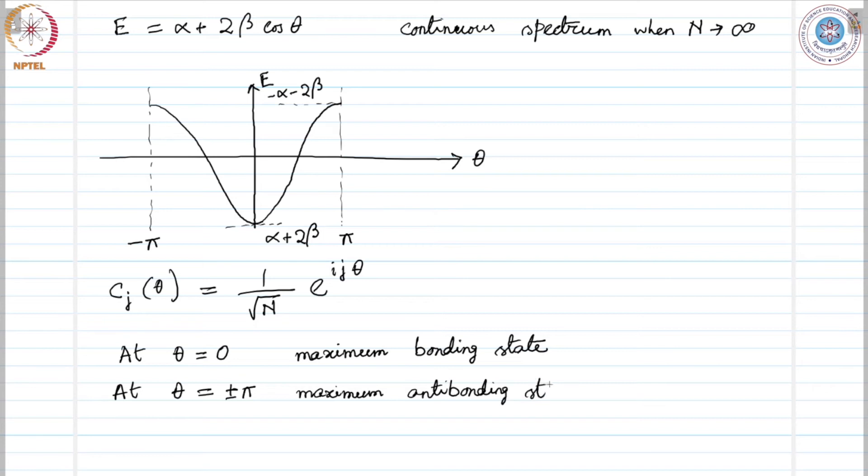Since θ specifies the energy and the expansion of the eigenstate in terms of the basis states, it is an appropriate quantum number for an infinite number of atoms and periodic boundary condition.